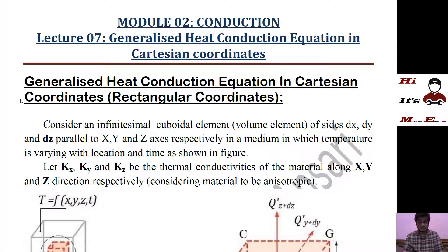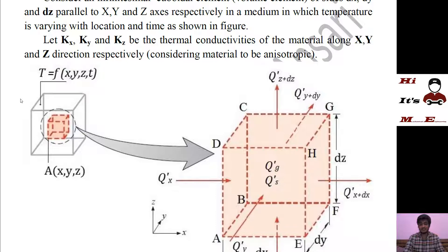So let's start our derivation. First of all, we will consider an infinitesimal cuboidal element — that is a volume element with dimensions dx, dy, and dz. This element is cuboidal in shape and its size is very small — negligibly small. Its sides dx, dy, and dz are parallel to the x, y, and z axes respectively as shown in the figure.